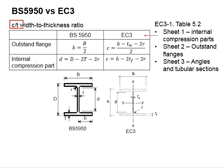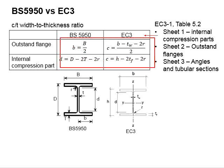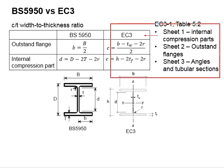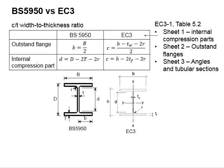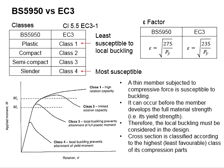Next, regarding the width-to-thickness ratio of sections, the formulas given by the two standards differ. This ratio is normally calculated to classify sections as Class 1, Class 2, Class 3, or Class 4 in Eurocode 3. The details can be found in Eurocode 3 Part 1, Table 5.2 for different types of sections.